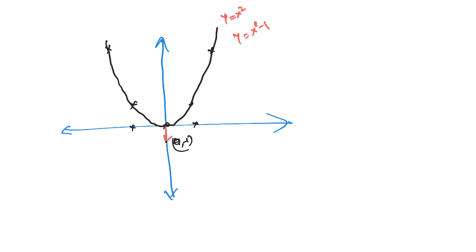1 squared minus 1 is 0. 2 squared minus 1 is 3. Now we add a parabola here — this is the same parabola. These are the basic graphs: y equal to x, y equal to x plus 1, y equal to x squared minus 1, x squared plus 1, and 2x squared minus 1. These graphs are very similar and simple.